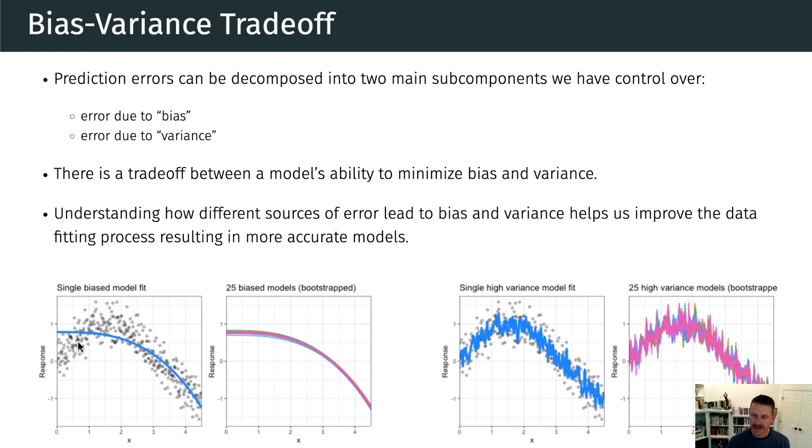Now, variance, high variance is the opposite. It's when we have a very flexible model, but it's so flexible that it actually is chasing individual data points in our data. And so the thing is, both of these models will not generalize well to new unseen data, but they don't generalize well for two different reasons. And we're going to get into that.